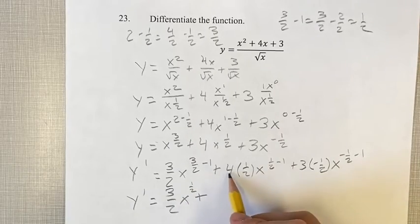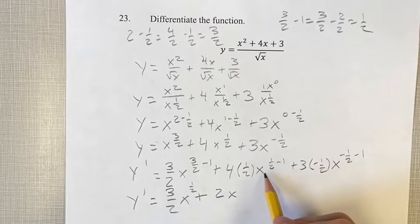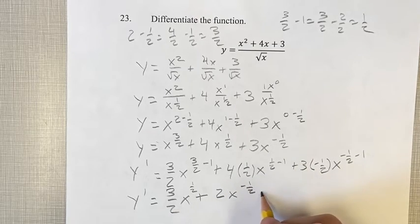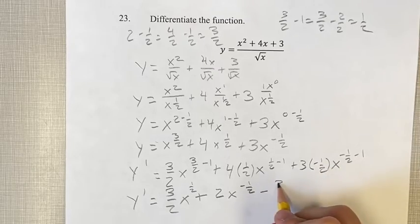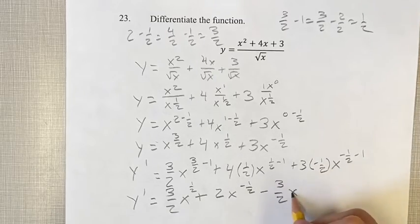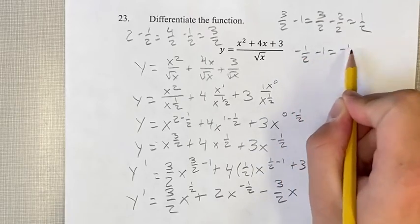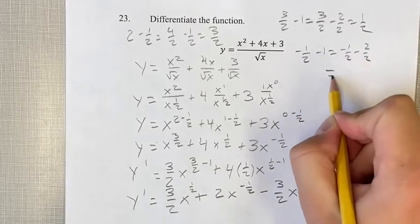plus 4 times 1 half is 2, x to the 1 half minus 1 is negative 1 half, minus 3 times 1 half is 3 halves, x to the minus 1 half minus 1, minus 1 half minus 2 halves, to the negative 3 halves.